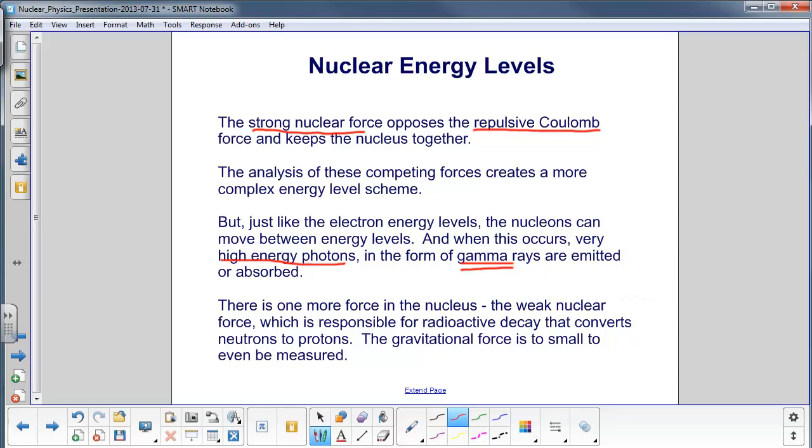Gamma rays will occur with transitions within a nucleus. One more force in the nucleus, the weak nuclear force. That's the third fundamental force. We have strong nuclear, electromagnetic, now the weak nuclear force. That's responsible for the radioactive decay that converts neutrons to protons.